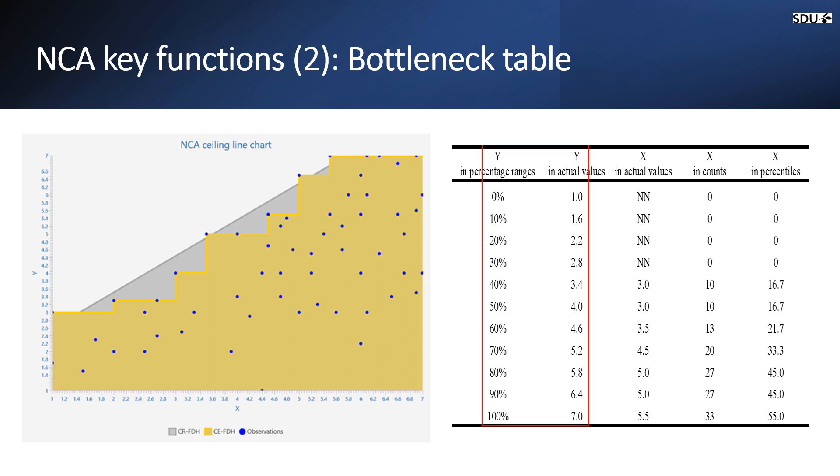The first column here represents dependent variable. It lists the percentage range for the outcome, which is a default visualization often used in the NCA. It expresses the value of Y in percentage of their range. For example, 0 corresponds to the lowest observed value and 100 is the highest observed value.